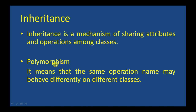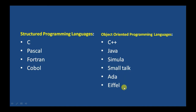Polymorphism is one of the crucial features of OOP. It simply means one name, multiple forms. For example, a move function may behave differently on a window and on other classes. Polymorphism means the same operation name may behave differently on different classes.